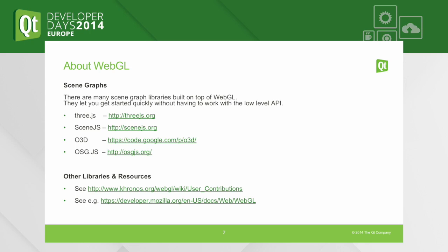Open Scene Graph — many people seem excited that it's now available on the web. There are also other libraries and resources built on top of WebGL. You can go to the Khronos webpage and see a listing of user contributions. There's also a bunch of tutorials available on the Mozilla website and other sites to get started with WebGL.